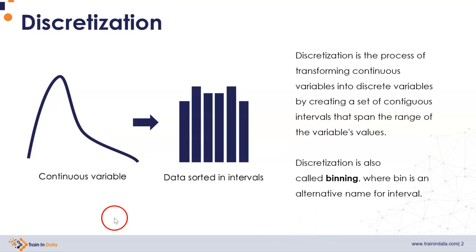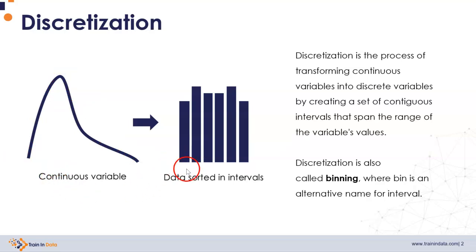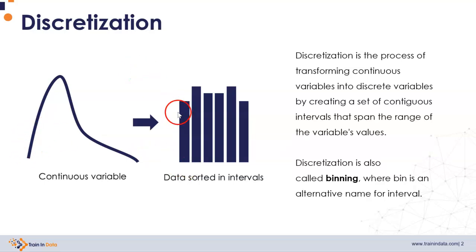In essence, we have a continuous variable with a certain distribution, and what we do is we delimit intervals that start at some value and end at some other value, and then we sort the variable values into these intervals.